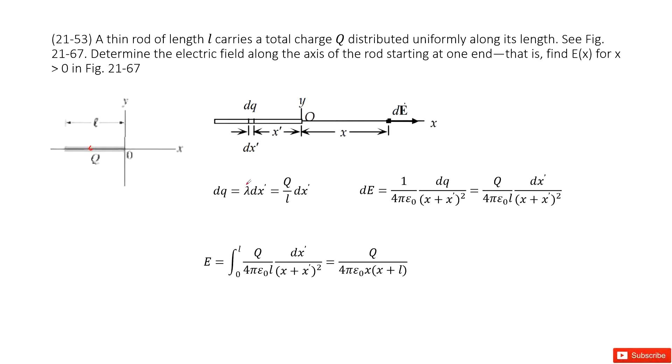Therefore, we can write it as this one. The dq, the charge it carries, is just the density times the dx. And this density can be written as the total charge for this wire divided by length of this wire, Q divided by L dx.